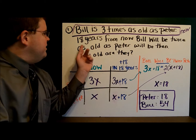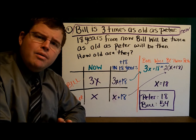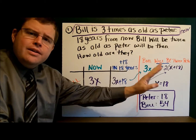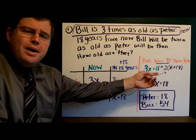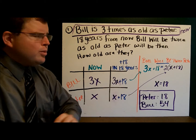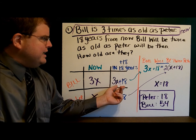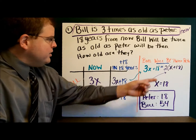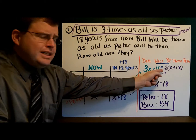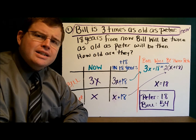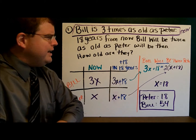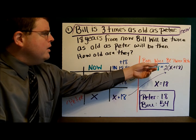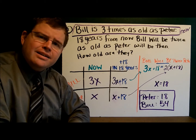Now you might be wondering: why didn't we use the piece about Bill being twice as old as Peter in the table? We don't use that for the table. What we use for the table is what we know about now, and then we add or subtract depending on whether we're going into the future or the past. We use that other piece of information to write the equation. Bill will be twice Peter: 3X plus 18 equals 2 times X plus 18. I recommend writing that statement out to fill in the blanks.